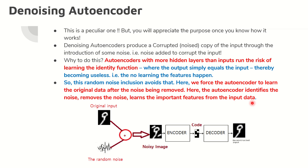First, let us understand the denoising autoencoder. This would sound a little peculiar but you will appreciate the intent behind it. Denoising autoencoders produce a corrupted copy of the input — we send the input and corrupt it. Why do we do this? Autoencoders with more hidden layers than inputs run at risk of learning the identity function.